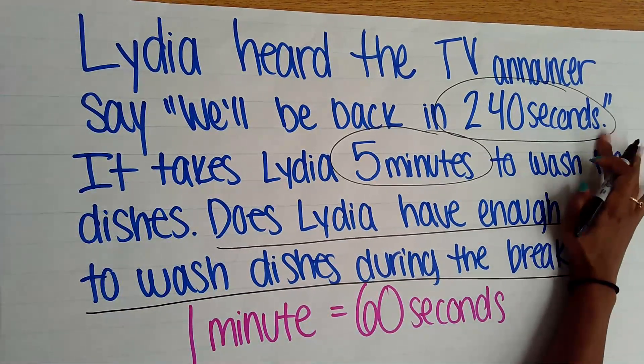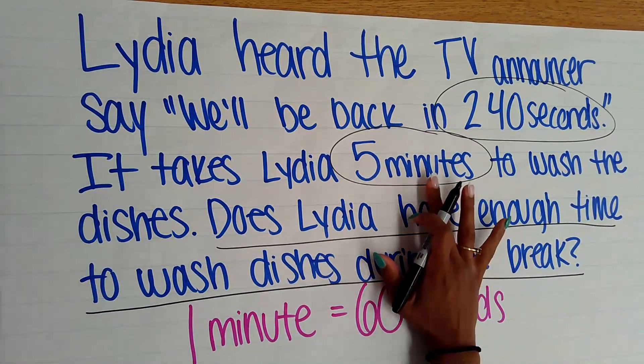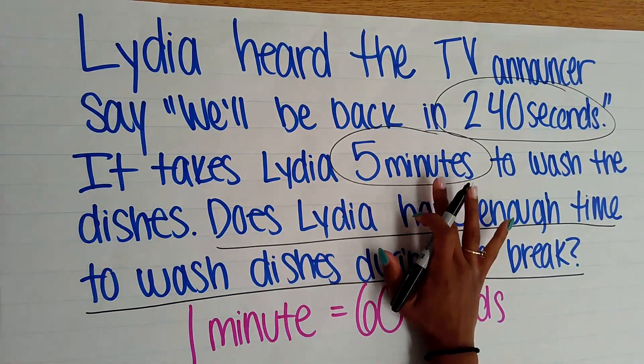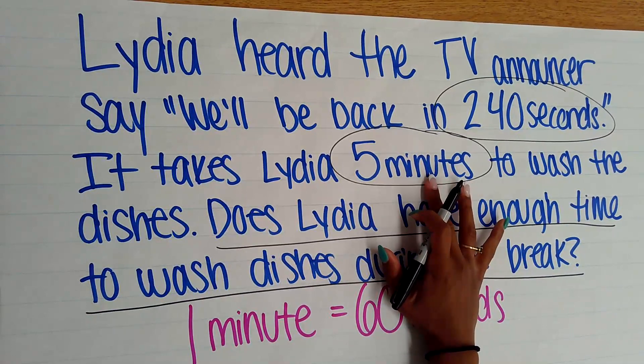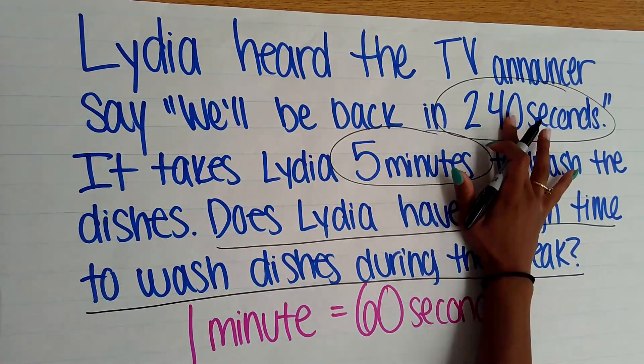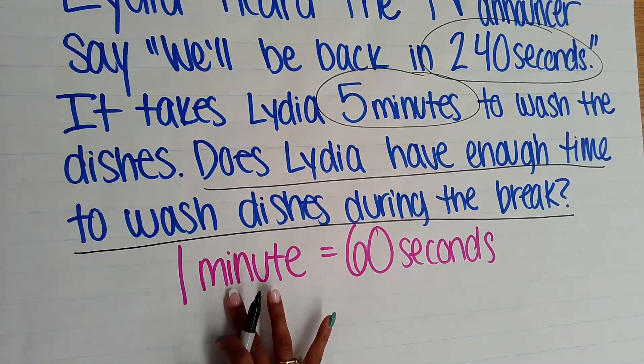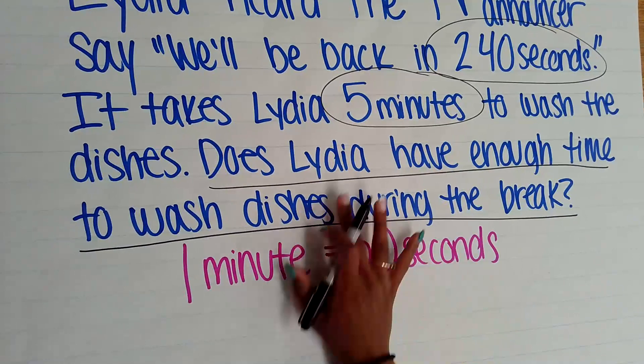So I know the commercial break is 240 seconds long. However, it takes her 5 minutes to wash the dishes. I need to take this 5 minutes and convert it to seconds so I can compare the two times a little easier. So here's my initial conversion: 1 minute equals 60 seconds. It takes Lydia 5 minutes...